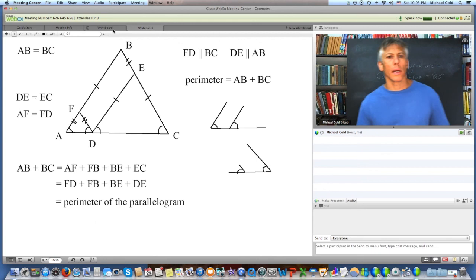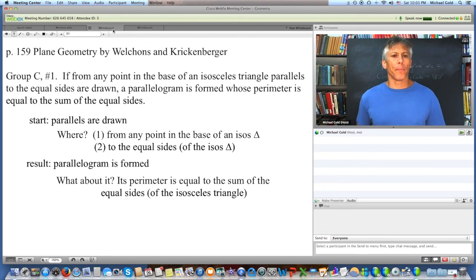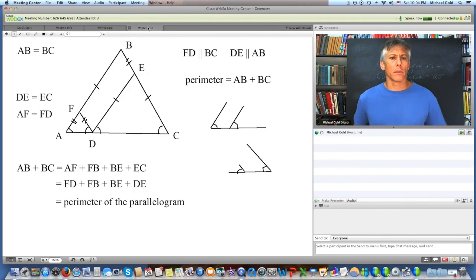So to look back at this, we showed that the parallels, well, when you draw parallels to the equal sides of an isosceles triangle to the sides, you get a parallelogram. And that parallelogram has a perimeter equal to AB plus BC. So we did it. Very good.